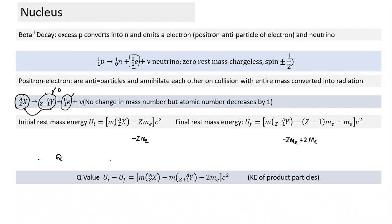In beta decay the daughter nucleus has mass thousands of times larger than the beta particle, so the daughter carries very small kinetic energy. The beta particle (electron or positron) carries a much higher proportion of kinetic energy. That is why in alpha decay both particles share comparable energy, but in beta decay the daughter nucleus's kinetic energy is negligible.